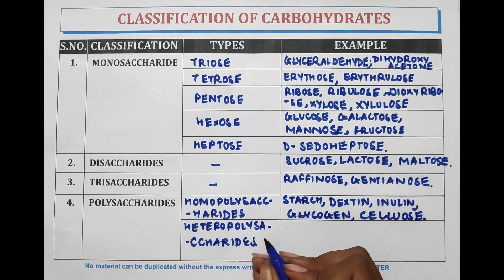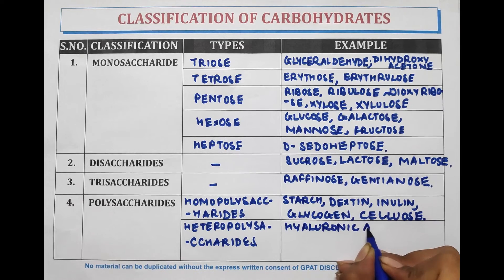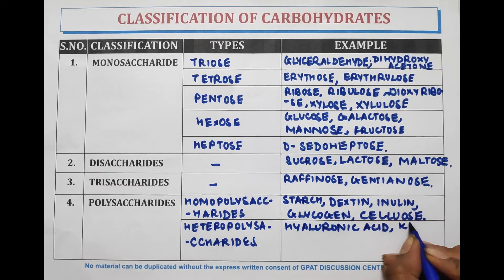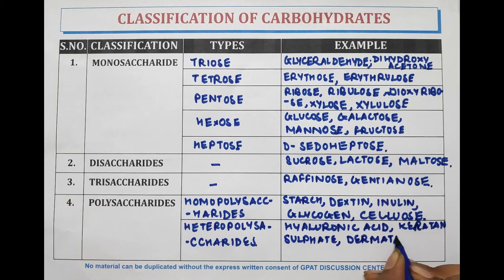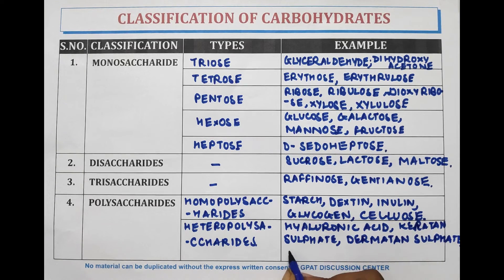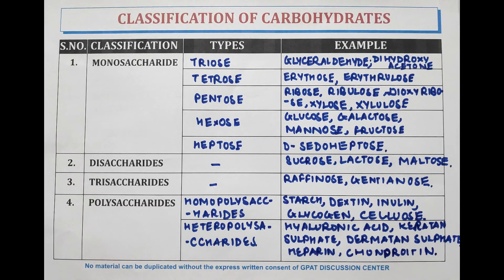Examples of hetero polysaccharides are hyaluronic acid, keratan sulfate, and chondroitin. These were the examples of polysaccharides.